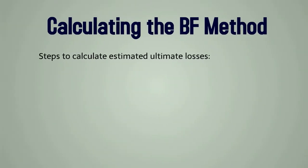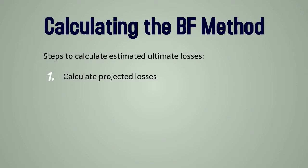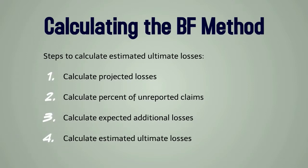Let's take a look at the steps required to calculate the ultimate incurred losses using the Bornhuter-Ferguson Method. First, we calculate the projected losses. Second, we calculate the percent of unreported claims. Third, we calculate the expected losses. And fourth, we calculate the estimated ultimate losses. Let's step through this step by step now.